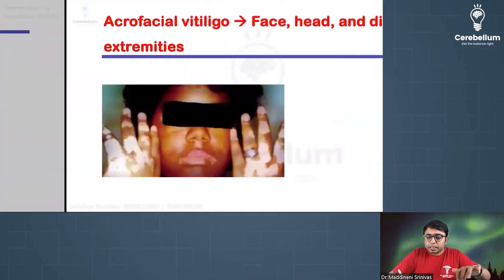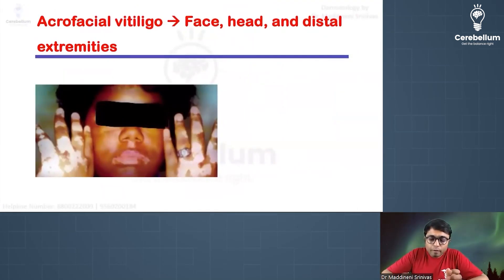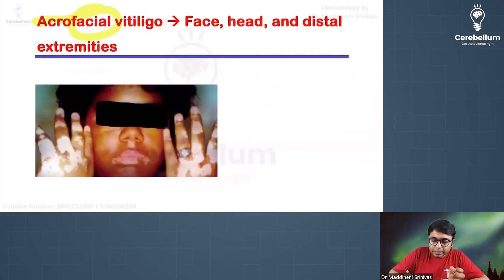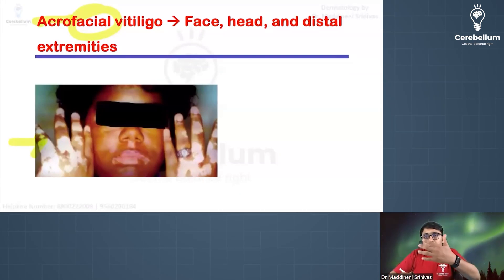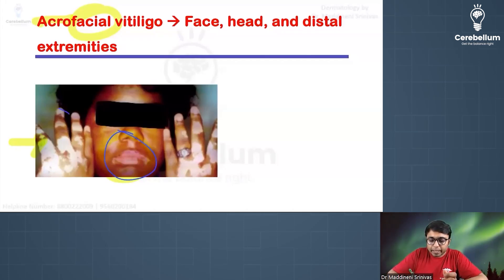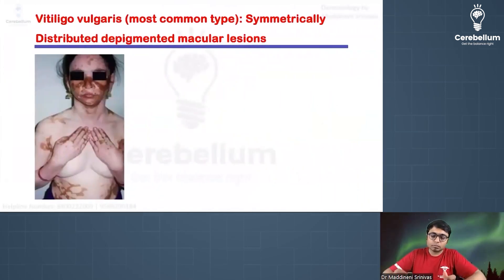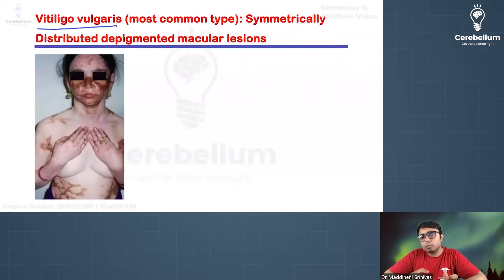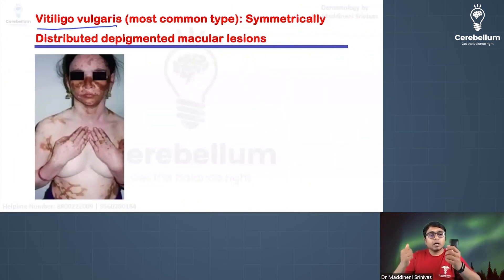In this image, acrofacial vitiligo is visible — depigmented macules over the acral areas (extremities) and over the face. In another image, vitiligo vulgaris is shown, the most common variety, with symmetrically distributed depigmented macules seen almost all over the body.